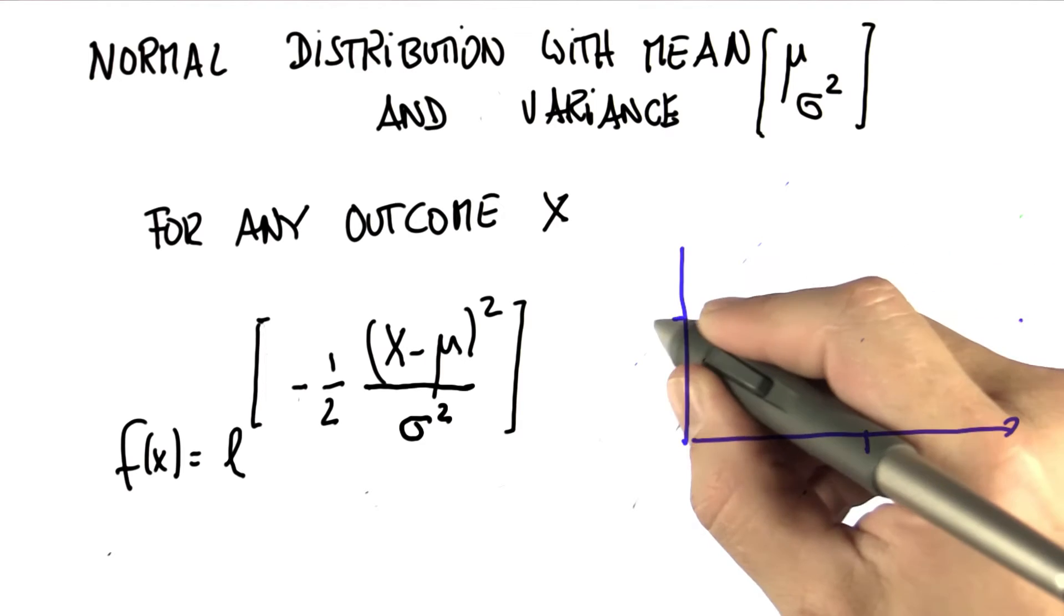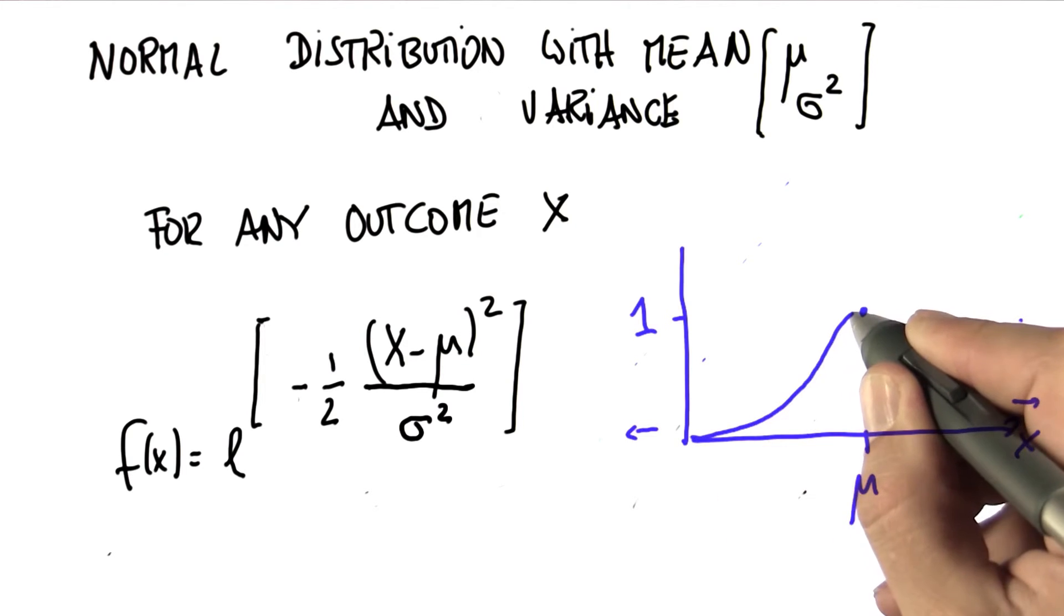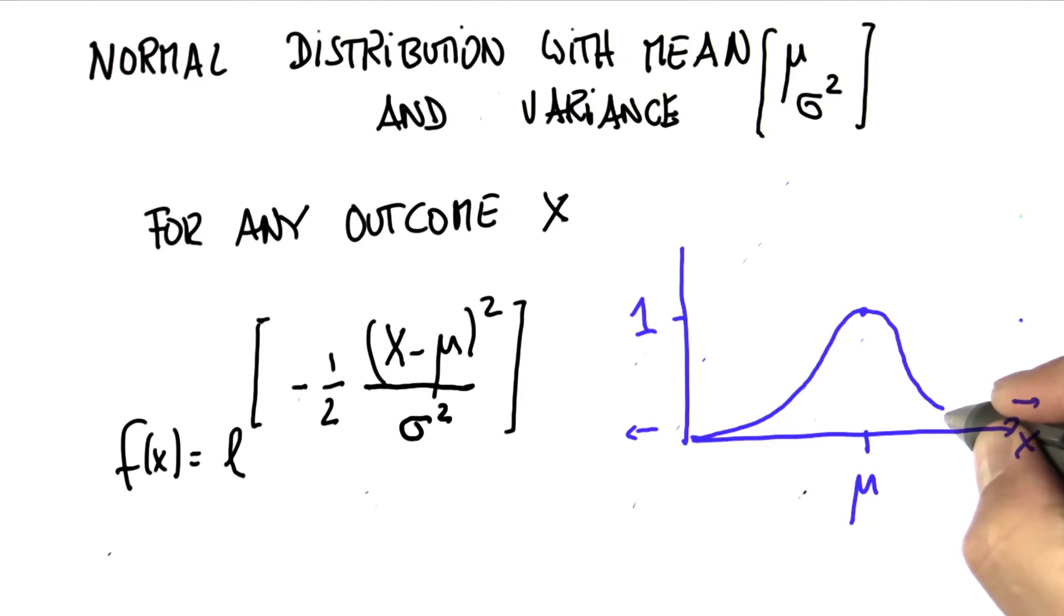We have a function f that assumes the value 1 when x equals mu, that goes to 0 when x goes to plus or minus infinity, and it so happens it looks like a bell curve. The fact that it looks like a bell curve is not entirely obvious, but you have to take my word for it.